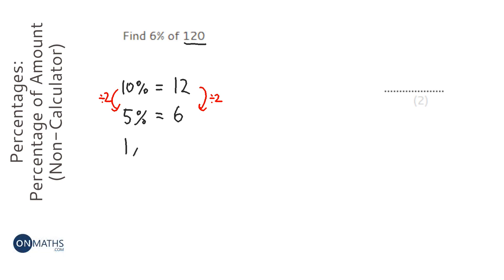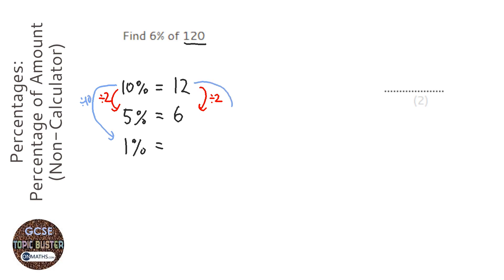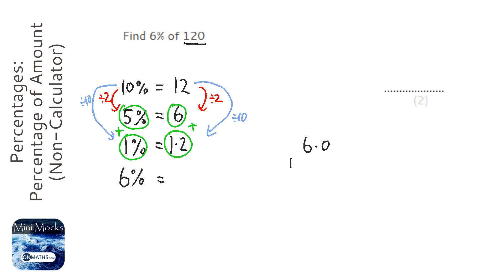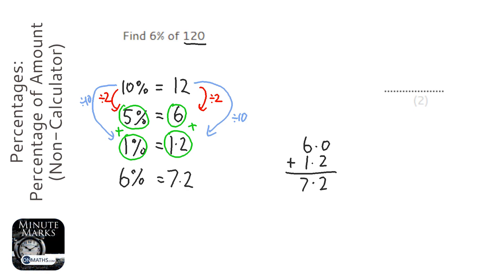Then I'm going to find 1%. To do that I'm just going to get the 10% and divide it by 10, which would be 1.2. Now to get to 6%, I'm just going to add the 5% and the 1% — so I'm going to add 6 and 1.2. Using a quick column: 6.0 plus 1.2 — 0 plus 2 is 2, 6 plus 1 is 7 — so my answer will be 7.2.